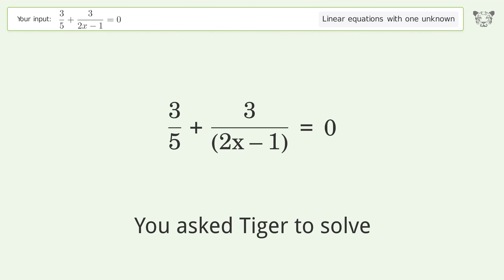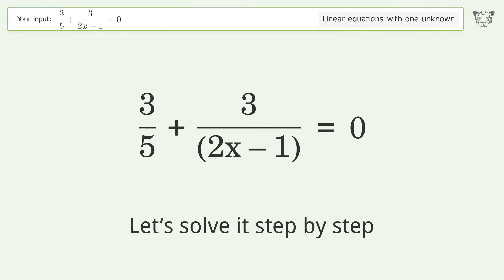You asked Tiger to solve this. It deals with linear equations with one unknown. The final result is x equals negative 2. Let's solve it step by step.